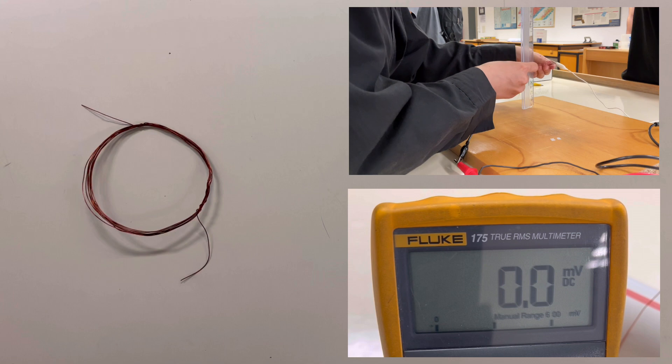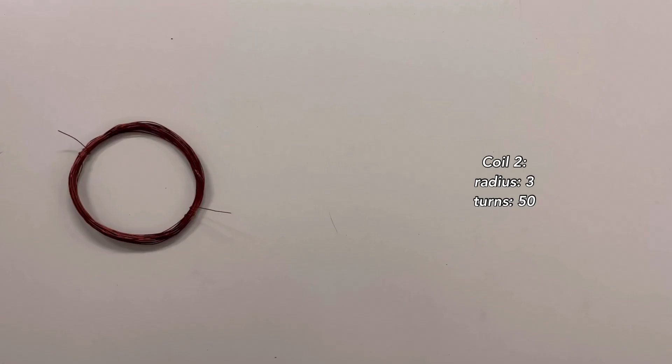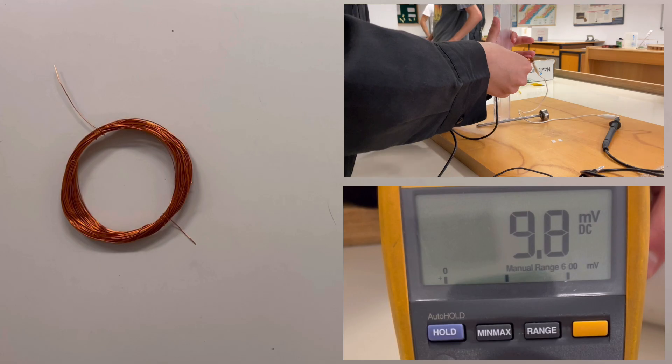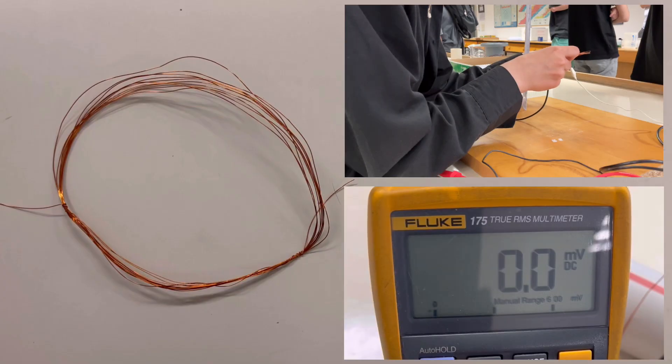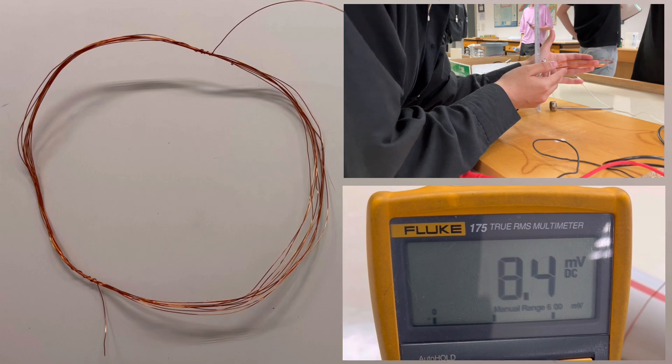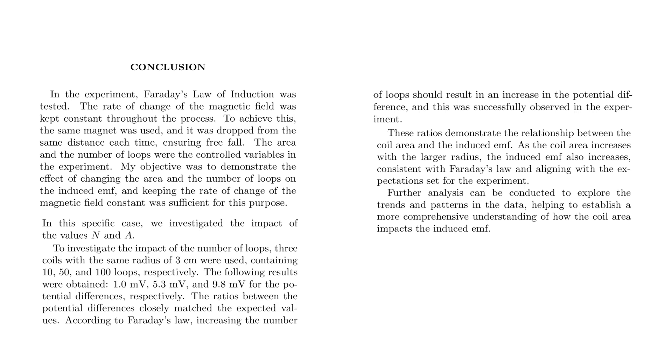In the experiment, Faraday's law of induction was tested. The rate of change of the magnetic field was kept constant throughout the process. To achieve this, the same magnet was used and it was dropped from the same distance each time, ensuring free fall. The area and the number of loops were the controlled variables in the experiment. My objective was to demonstrate the effects of changing the area and the number of loops on the induced EMF, and keeping the rate of change of the magnetic field constant was sufficient for this purpose.